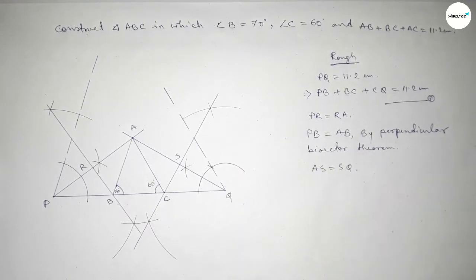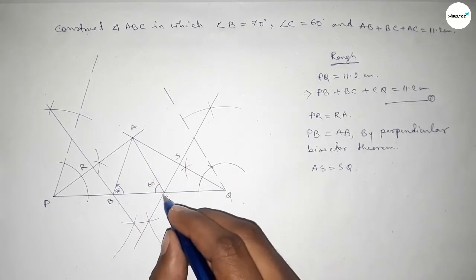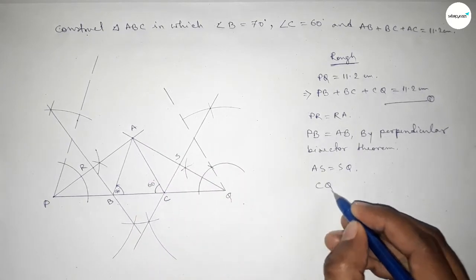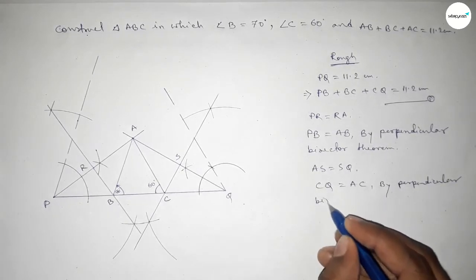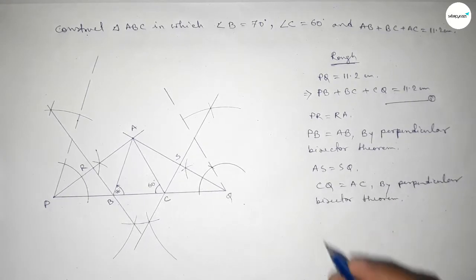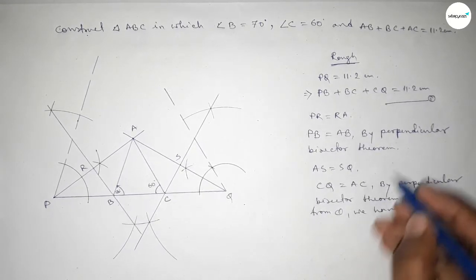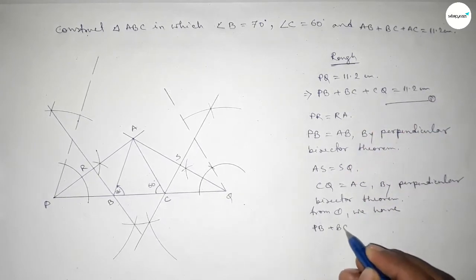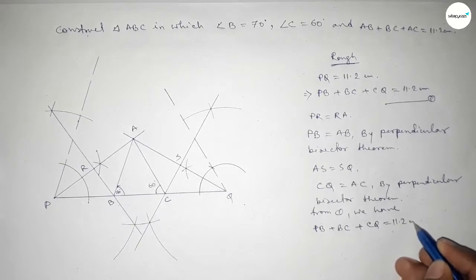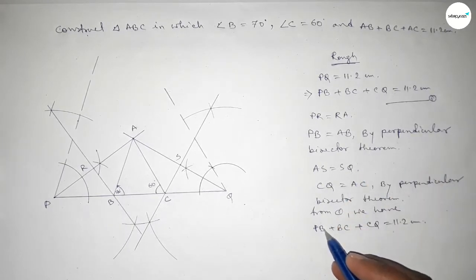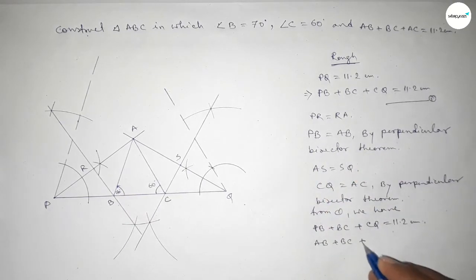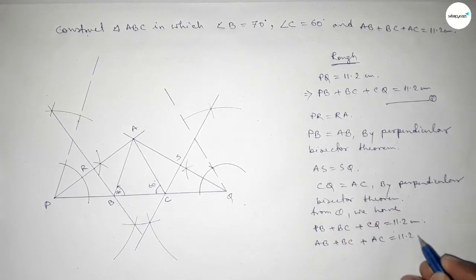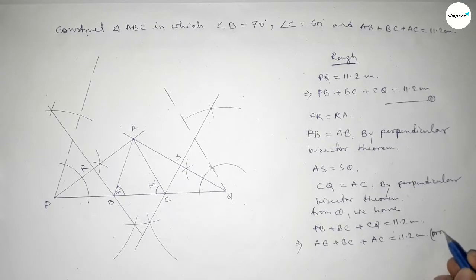By the perpendicular bisector theorem, the length AC equals CQ. So from relation one we have PQ equals PB plus BC plus CQ equals 11.2 centimeters. Now replacing: PB equals AB, and CQ equals AC. So this gives AB plus BC plus AC equals 11.2 centimeters.